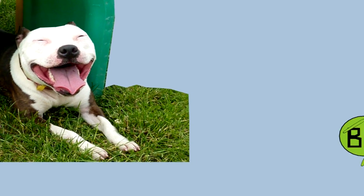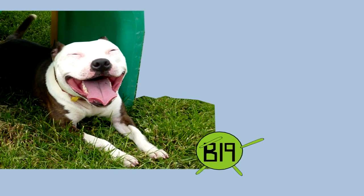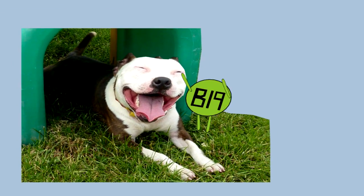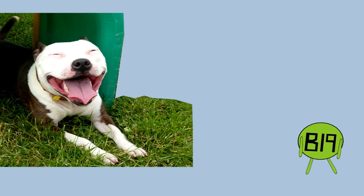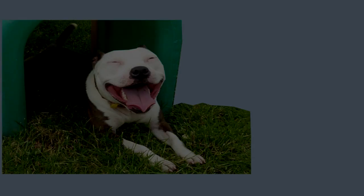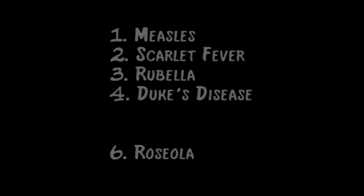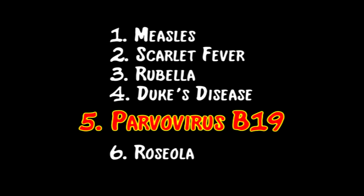Parvovirus forms that are pathogenic to animals were previously discovered. Parvovirus B19 cannot be contracted by or transmitted to animals. Parvovirus is also known as fifth disease because it was fifth among the common childhood diseases characterized by a rash.